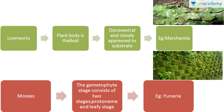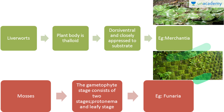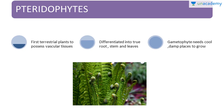There are two types: liverworts and mosses. In liverworts, the plant body is thalloid, dorsiventral, and closely appressed to the substrate — example Marchantia. In mosses, the gametophyte stage consists of two stages: the protonema stage and the leafy stage — example Funaria.